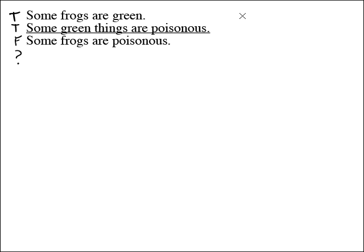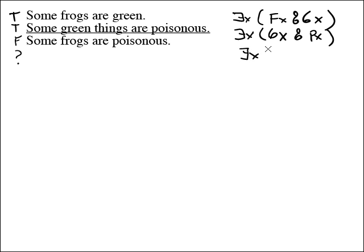Some frogs are green. That's obviously an existential. There is an x, fx, ampersand, gx. Some green things are poisonous. Another existential. There is an x, gx, ampersand, px. Some frogs are poisonous. There is an x, fx, ampersand, px. Alright, so we have now symbolized the argument.